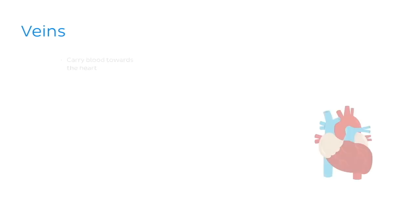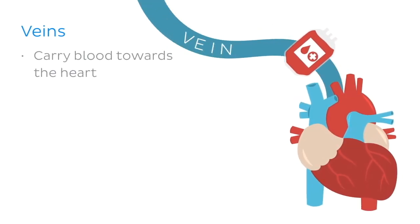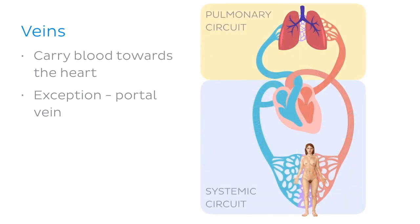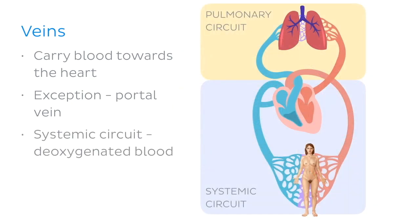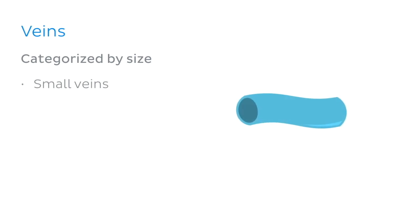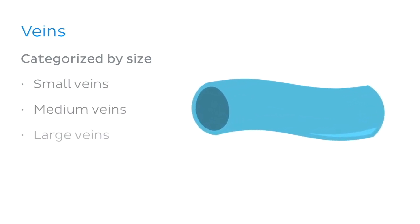Veins, in contrast, carry blood away from the rest of the body and towards the heart. One exception is the portal vein, which carries blood from the gastrointestinal tract to the liver. In the systemic circuit, veins carry deoxygenated blood, while in the pulmonary circulation, pulmonary veins carry oxygenated blood from the lungs to the heart. Their structure is not as varied as that of arteries, and they are generally just categorized by size into small, medium, and large veins.